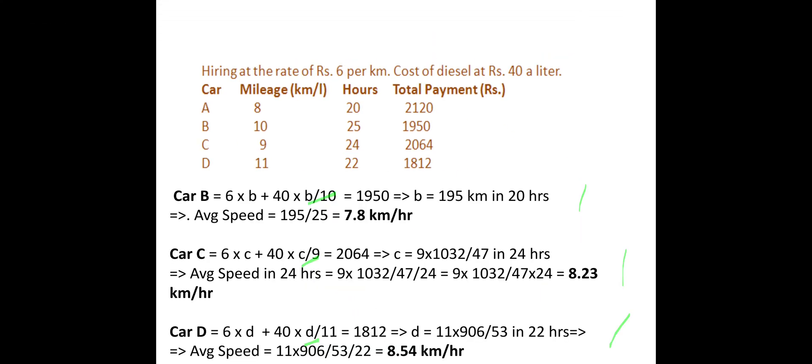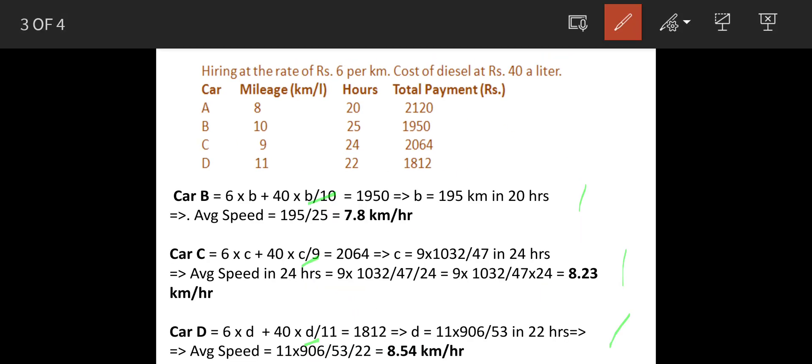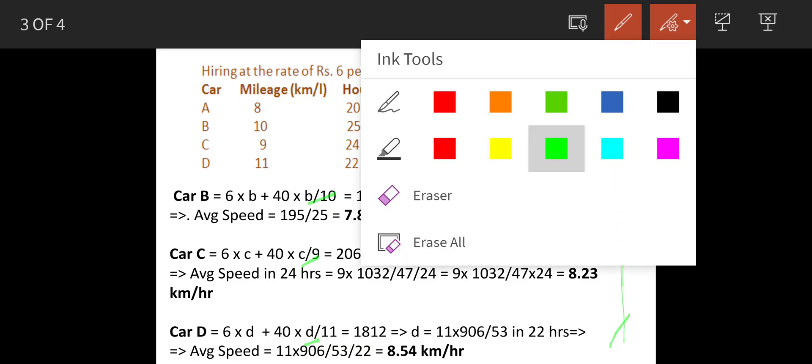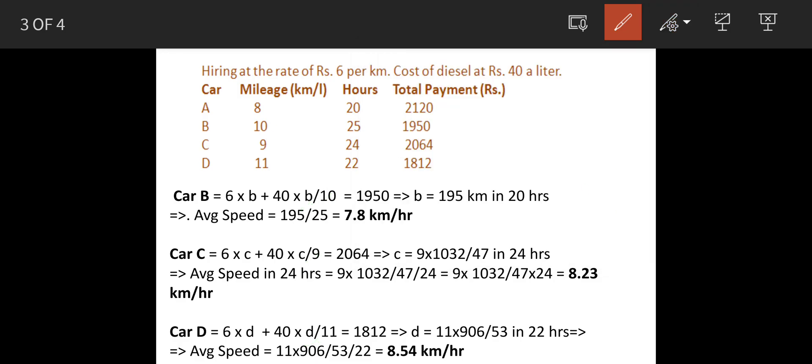Similarly car B, car C and car D. Distance covered by car B is B, by car C it is C, and car D it is D. So when we work out, we get these results.